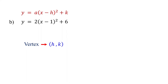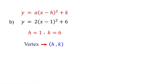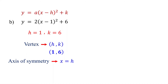For our example, the number inside the parentheses is negative 1, and h is the opposite of it, so it is positive 1. K is the constant term as it is, so it is equal to 6. Therefore, the vertex is the point 1 comma 6. The axis of symmetry is the vertical line x equals h, which is the x-coordinate of the vertex, so it is x equals 1.